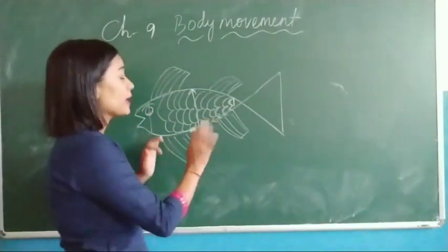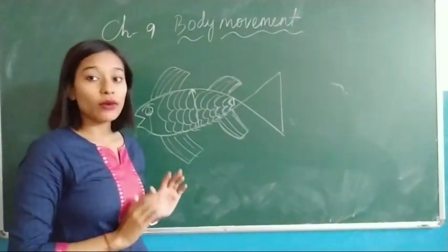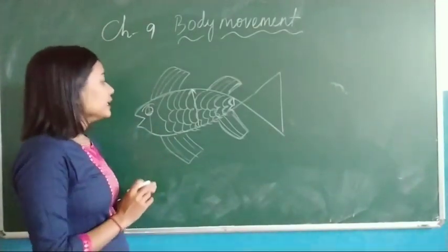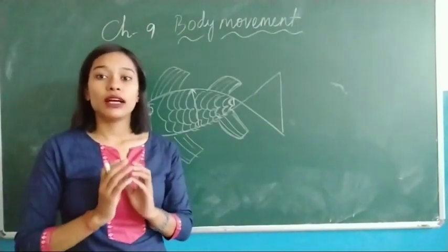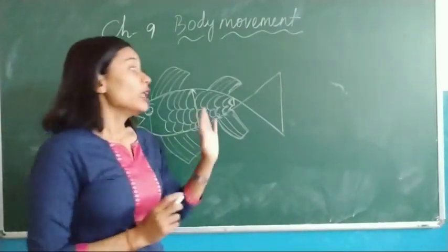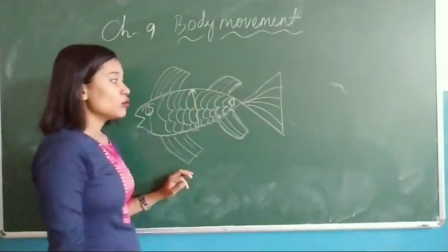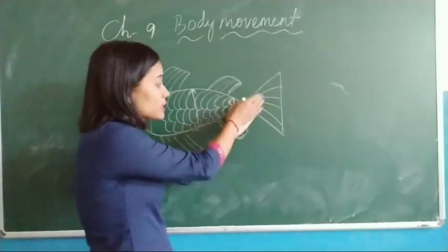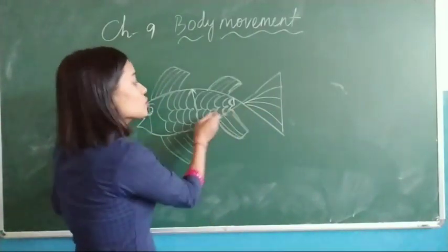Fish have a pair of fins which help them to change direction while swimming. Inside their body they have a swim bladder which is filled with air, and it helps them to float in the water. The tail moves side to side, creating a force which propels the fish to move forward. In this way, fish move from one place to another — this type of locomotion is called swimming.